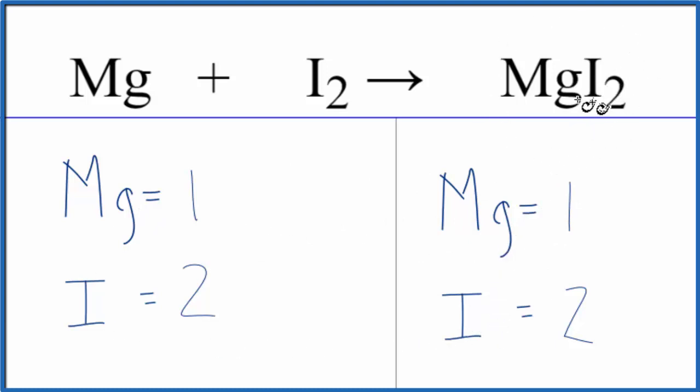The reason we end up with MgI2, and not just MgI, is that Mg, magnesium, is in group two on the periodic table. It has a two plus ionic charge. Iodine has a one minus when it forms bonds. Two times the one minus, two minus, two plus. They balance out and give us this neutral compound, MgI2.